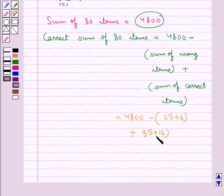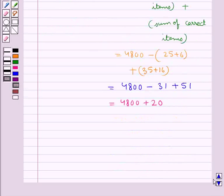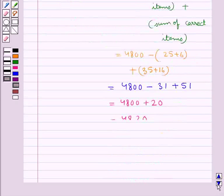This is further equal to 4800 - 31 + 51 = 4800 + 20 = 4820. So 4820 is the correct sum of 80 items.